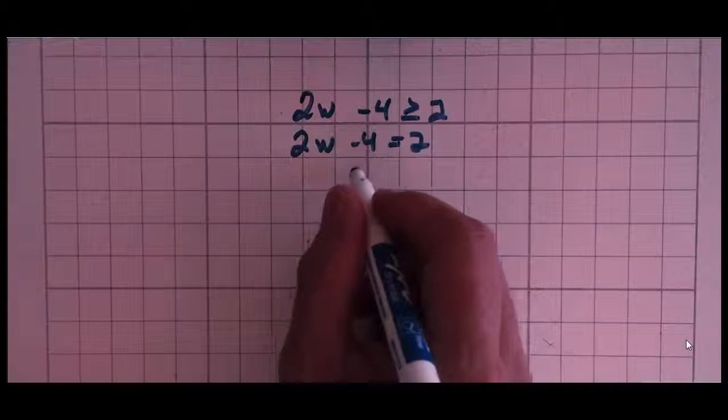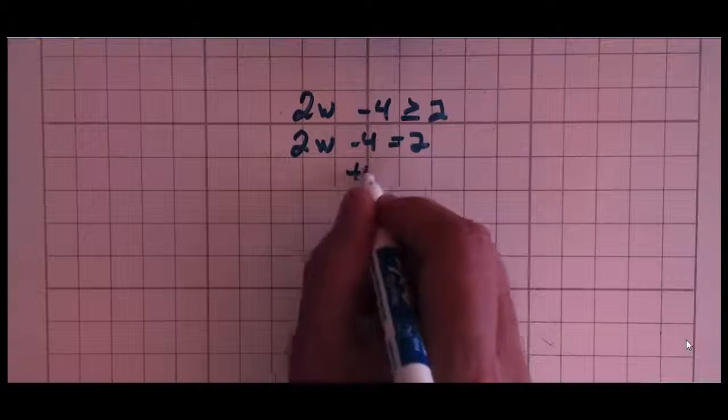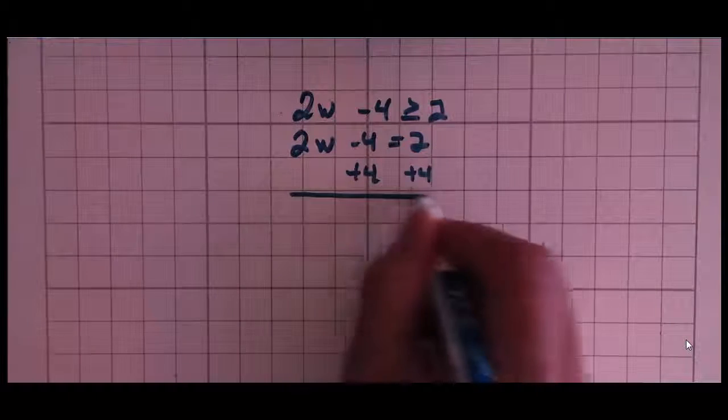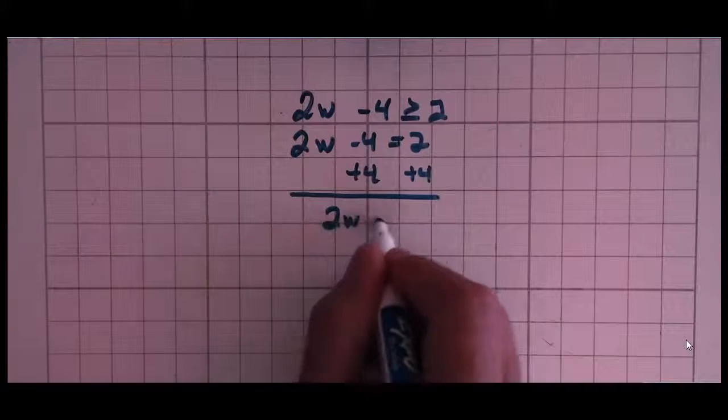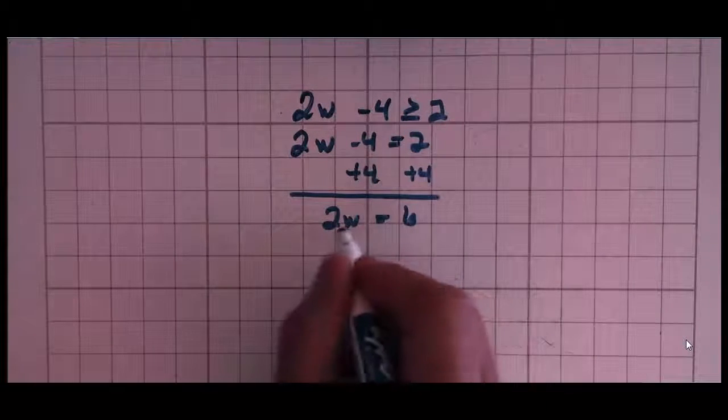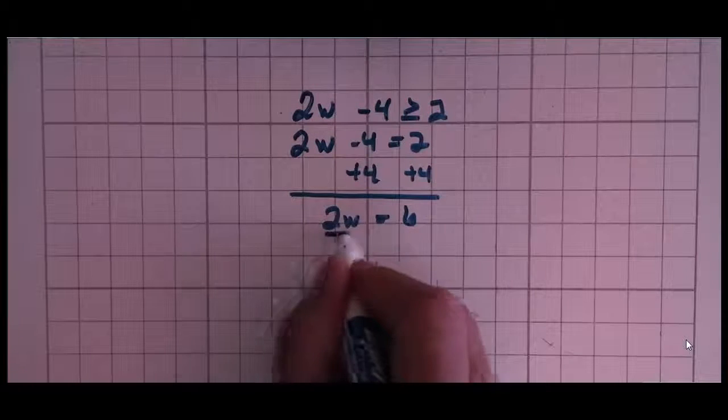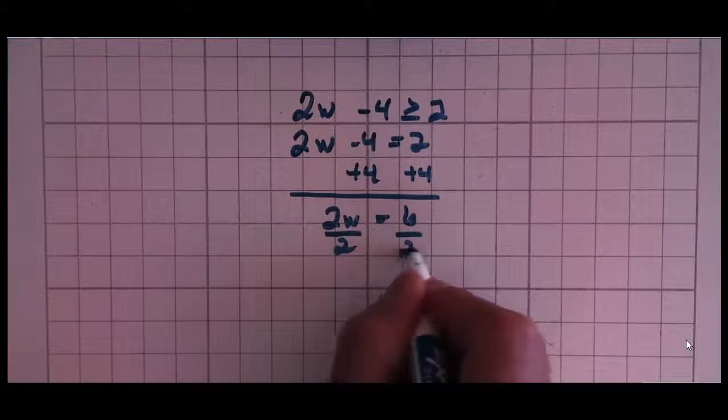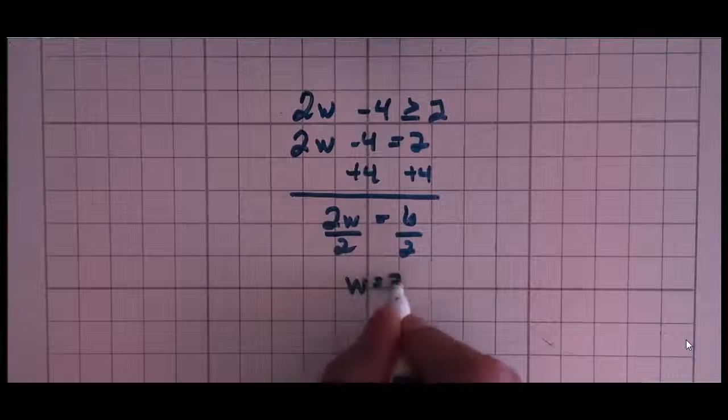You've solved two-step equations before, so you know you want to get rid of that 4, move it away from the 2w. You end up with 2w equals 6. And now to separate the 2 and the w, you divide by 2.